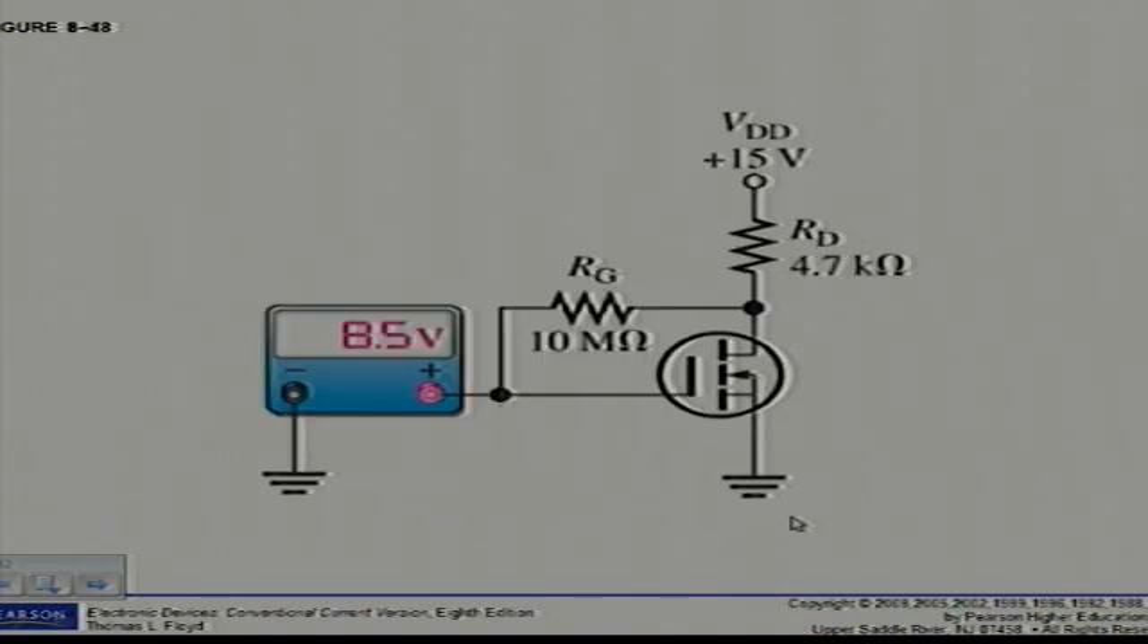Now if I go and look at figure 8.48, I can see that the meter indicates that VGS is equal to 8.5 volts. So since this is the drain feedback configuration, VDS is equal to VGS. I can just calculate ID which is VDD minus VDS over RD, and it gives me an answer of 1.38 milliamps. Straightforward.